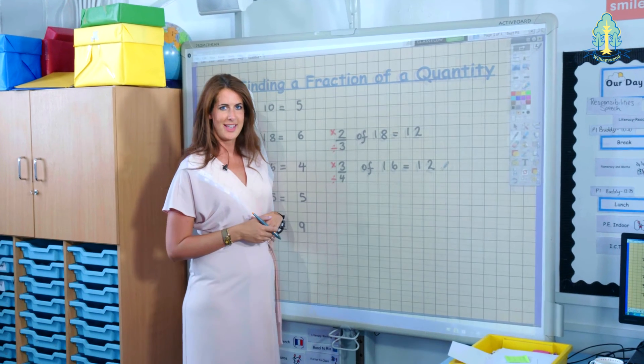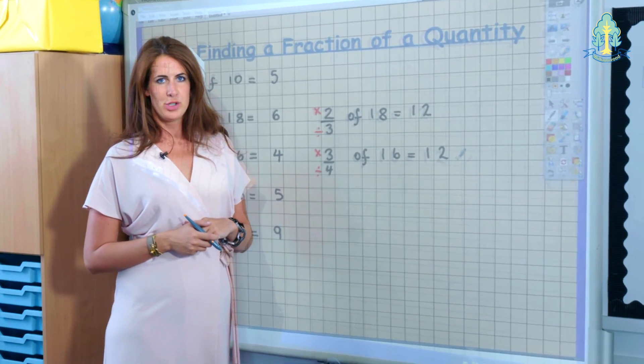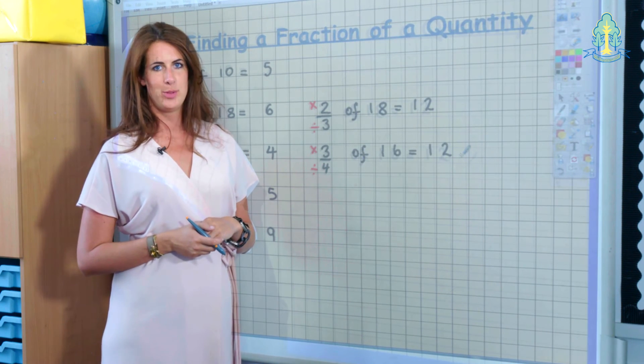One way of remembering this is through a rap called DDMM, where the children chant the strategy that they do: divide by the denominator, then multiply by the numerator.